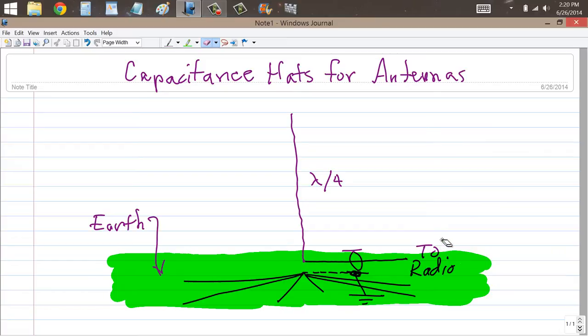Good vibrations at your service to talk about something called a capacitance hat. These devices are commonly used for vertical antennas, and they're used in particular when you want to make a vertical antenna shorter than it would have to otherwise be physically in space.